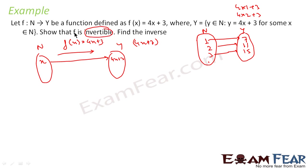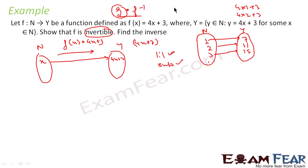The question is: first we have to prove it is invertible. For a function to be invertible it has to be one-to-one and onto. This approach is used when we only need to prove invertibility. But when we are supposed to find the inverse, we have to find a function g that equals f inverse.